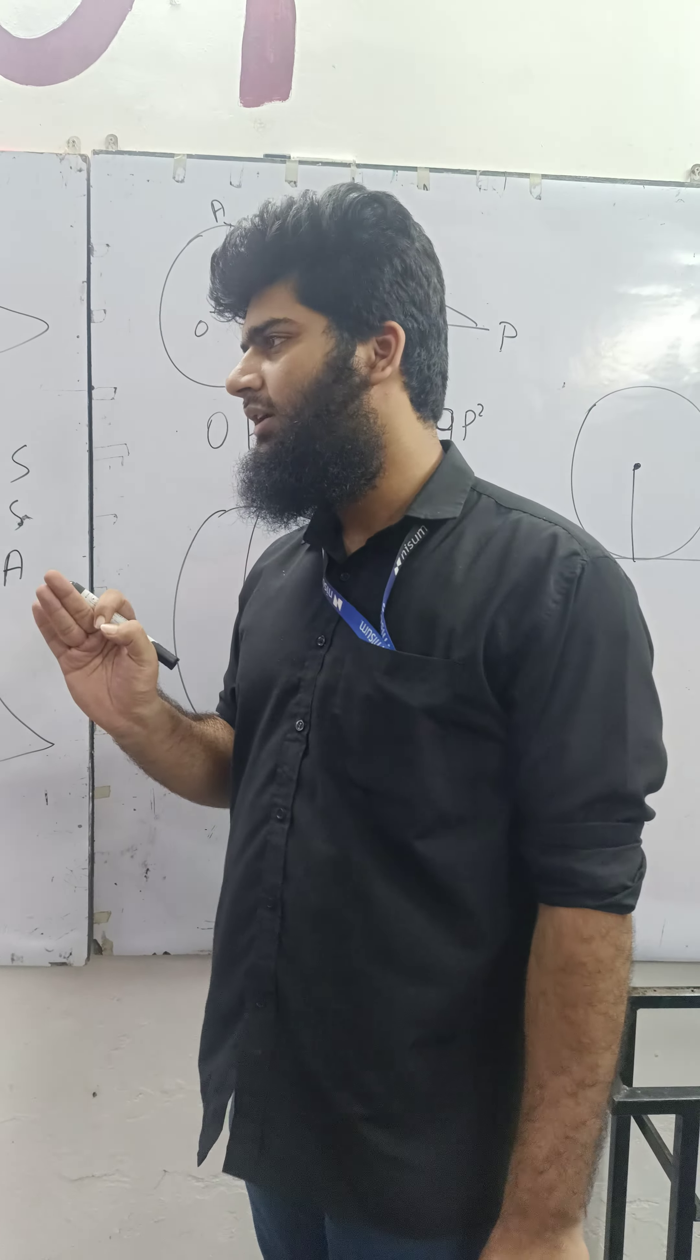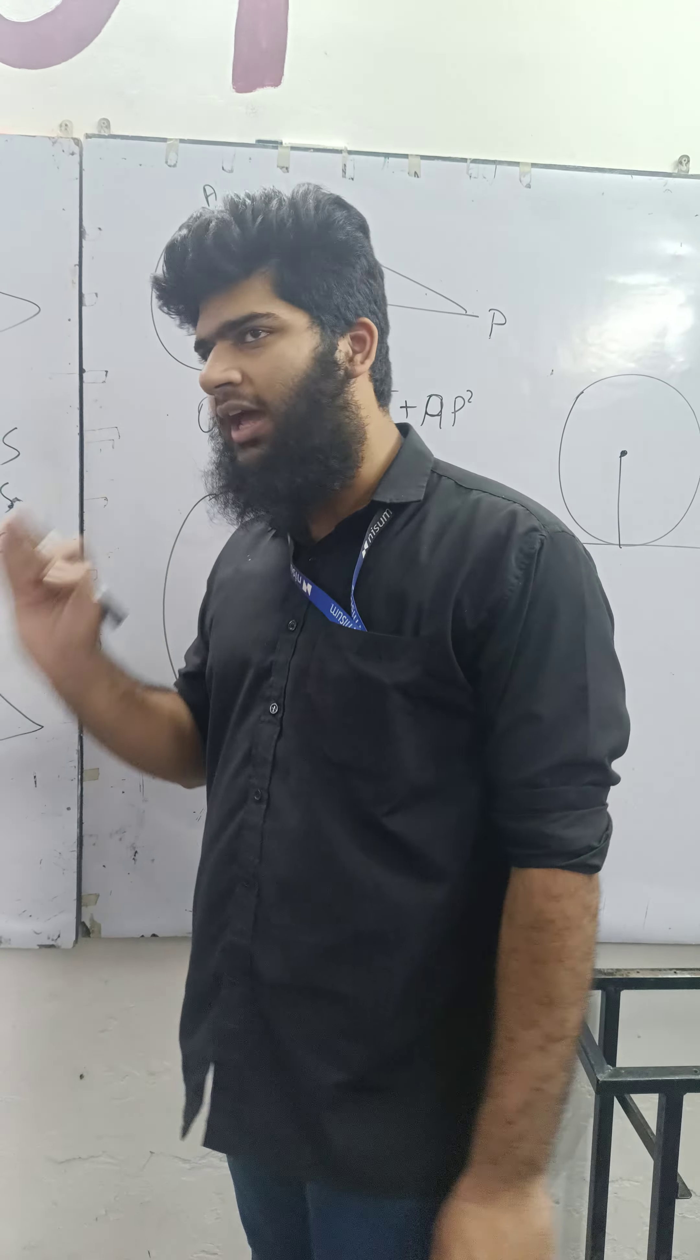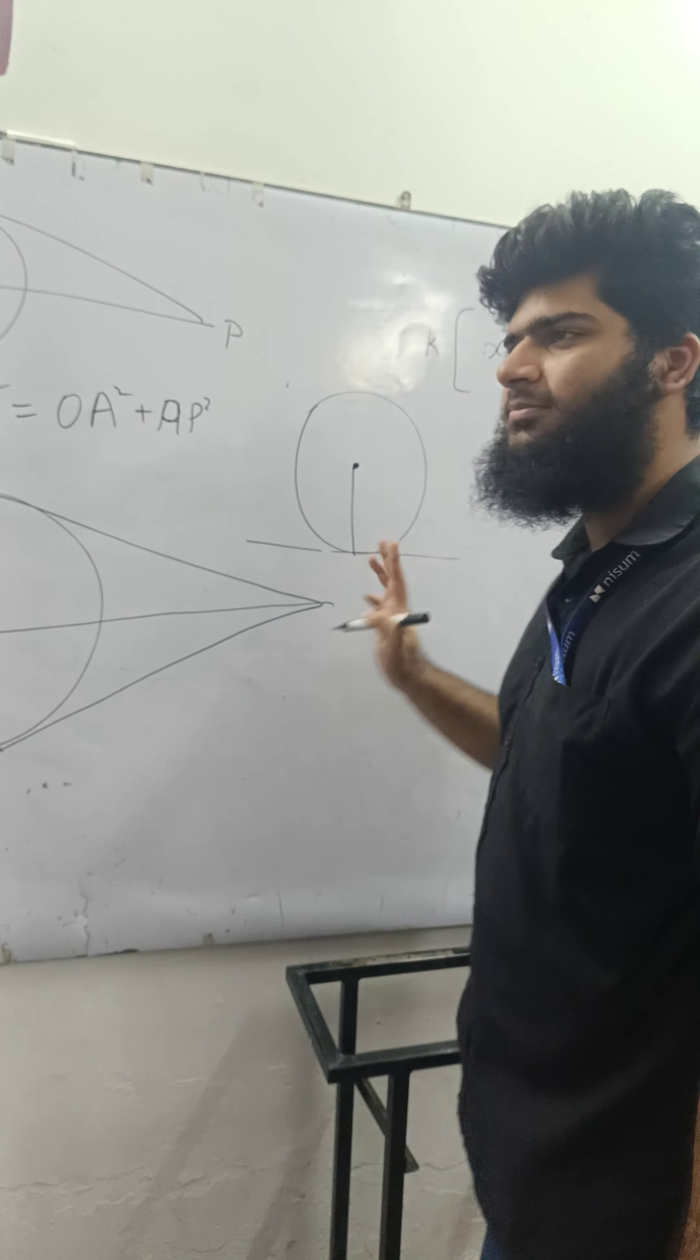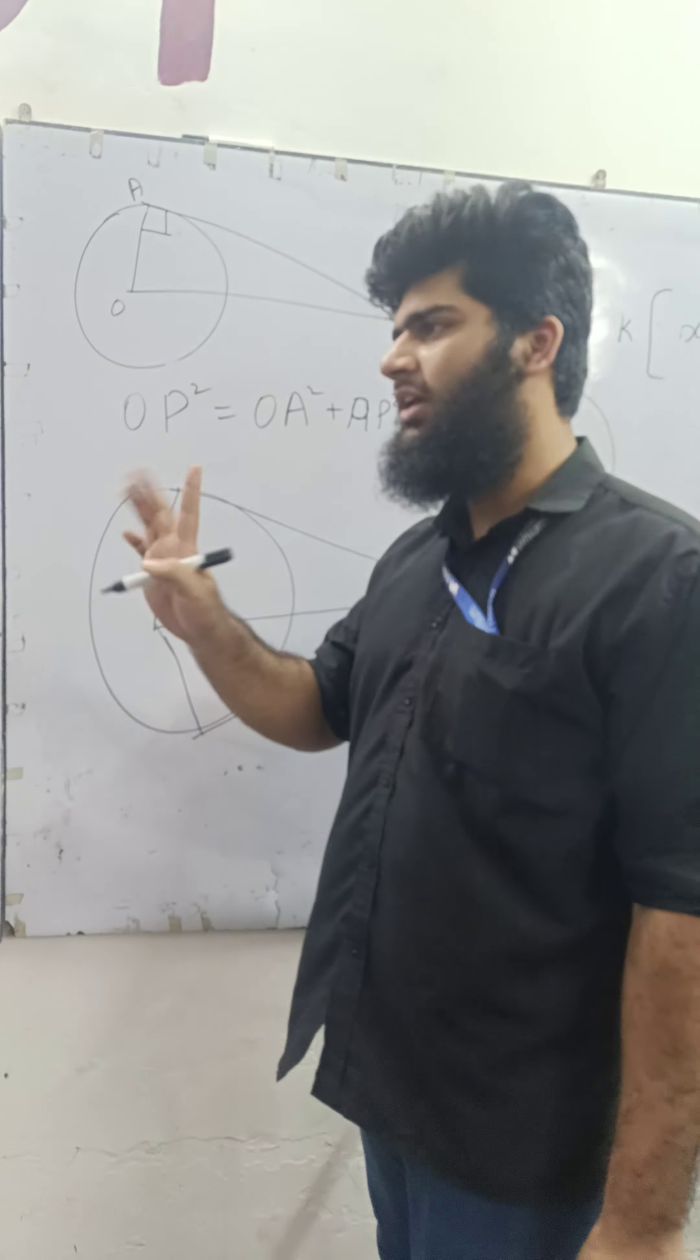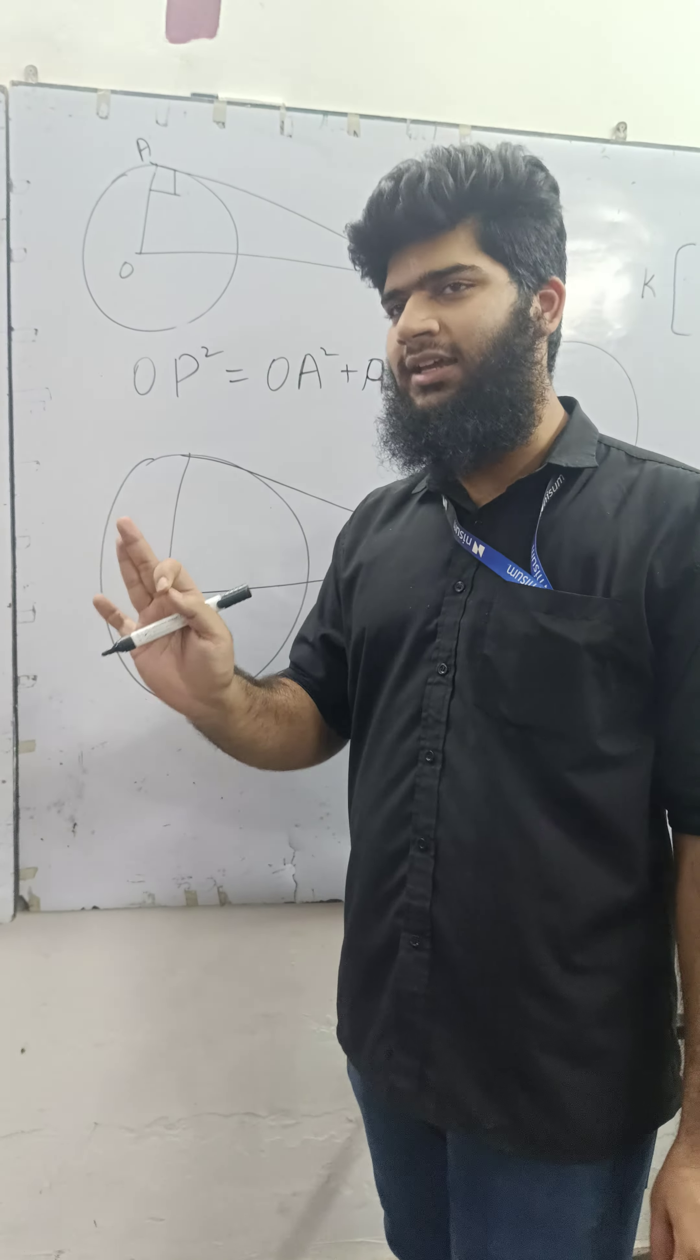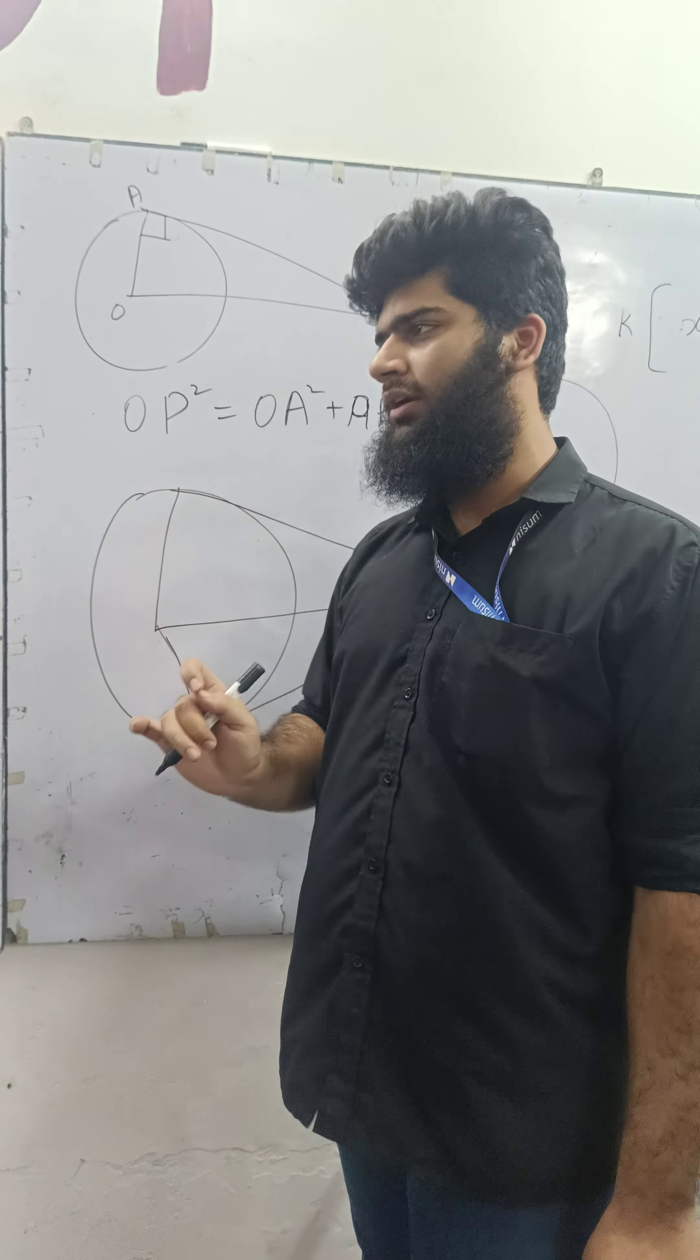What is the tangent? Tangent is a line where the circle is from one point. It's a line which touches the circle at a single point.